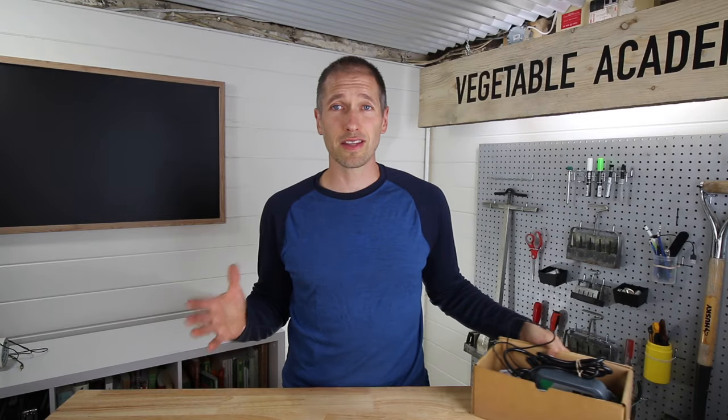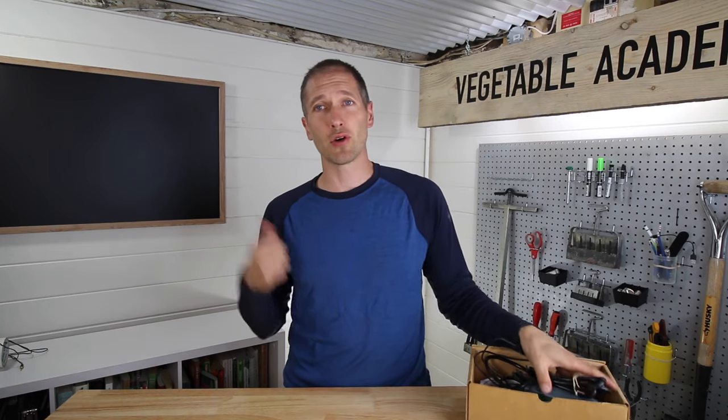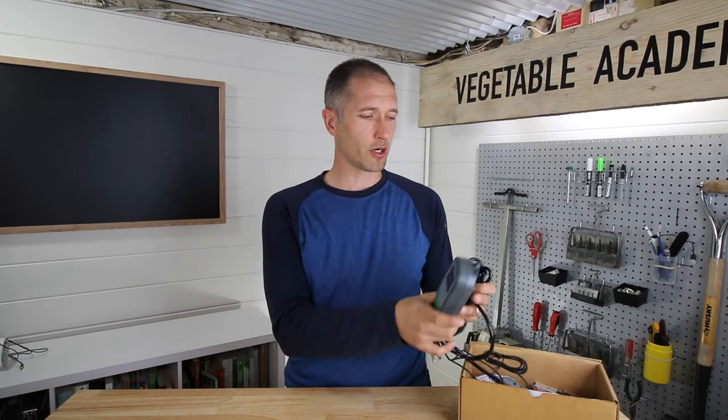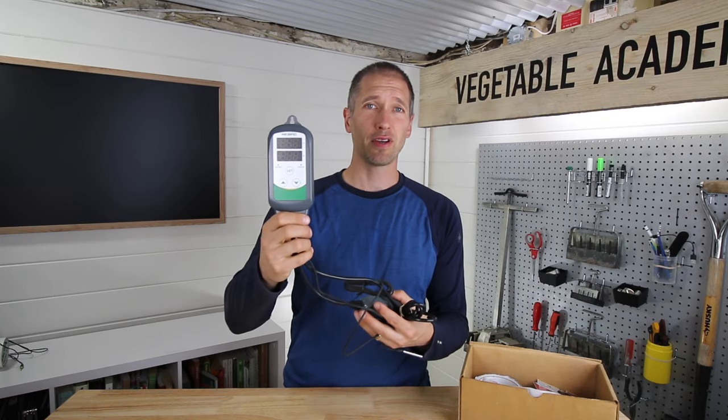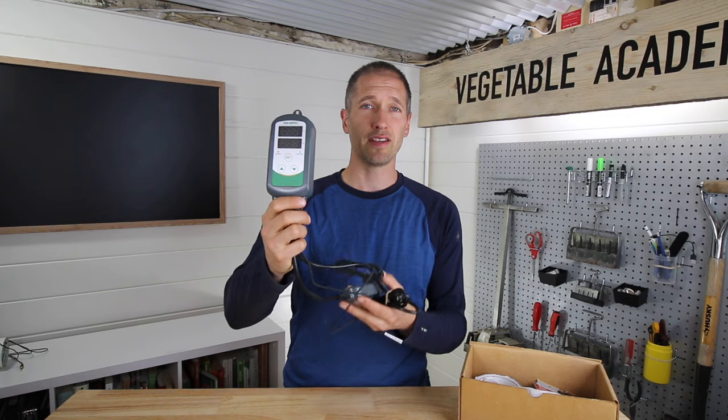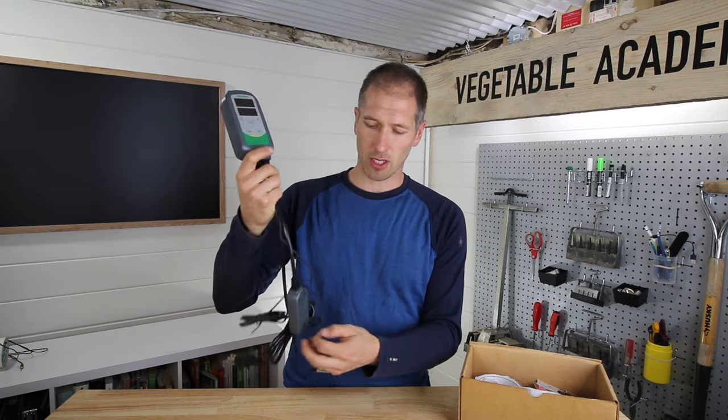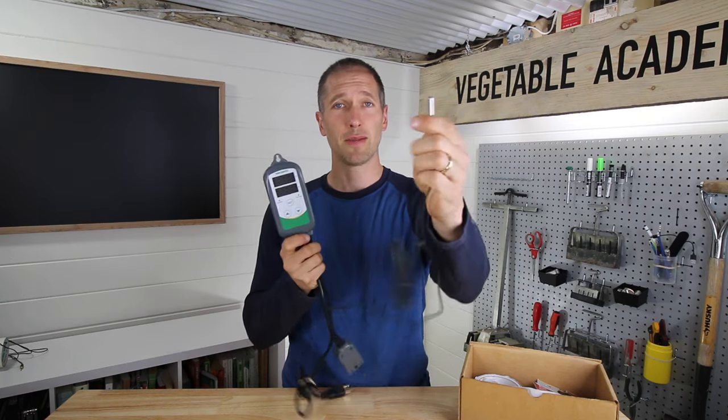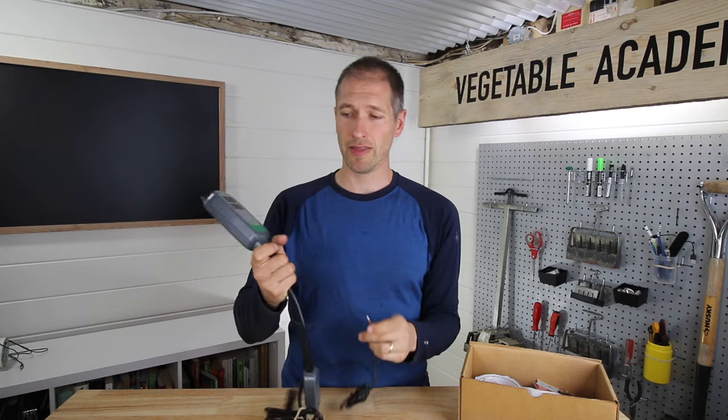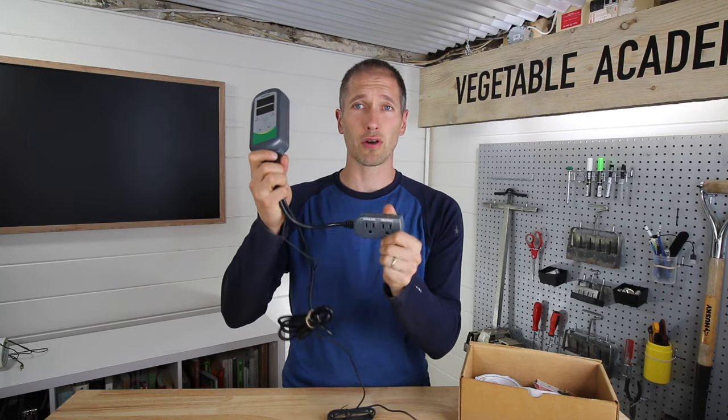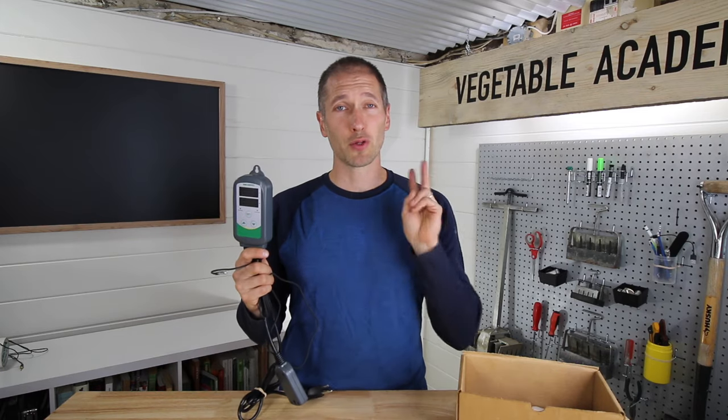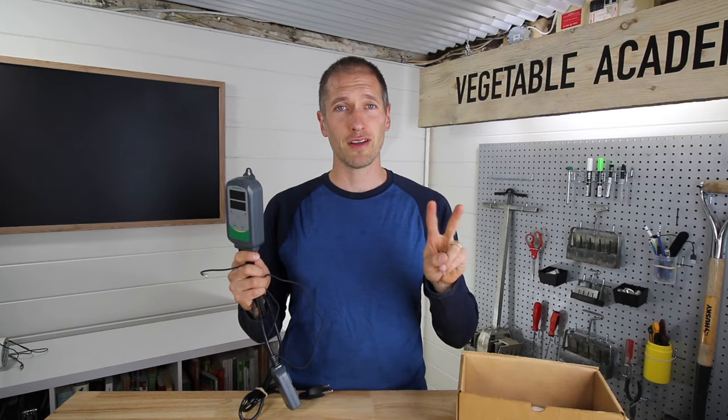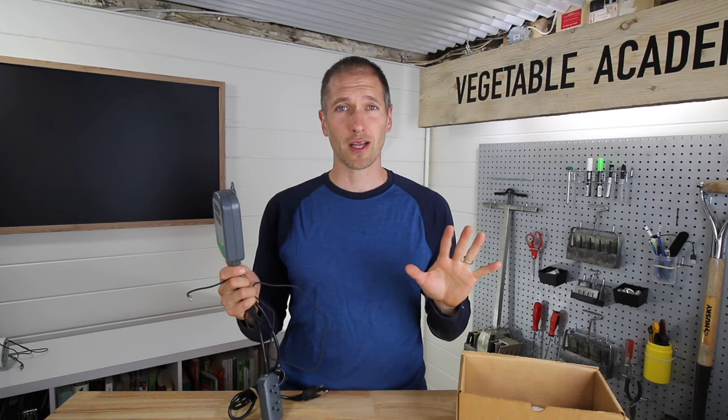Let's take a look at the equipment we'll be using to replace the CoolBot. First major component is the Inkbird temperature controller. These are really easy to find on Amazon. They come equipped with a temperature sensor and that activates a heating or cooling device. Really easy to operate. Thankfully, they're pretty cheap because you will need two of them for this operation.